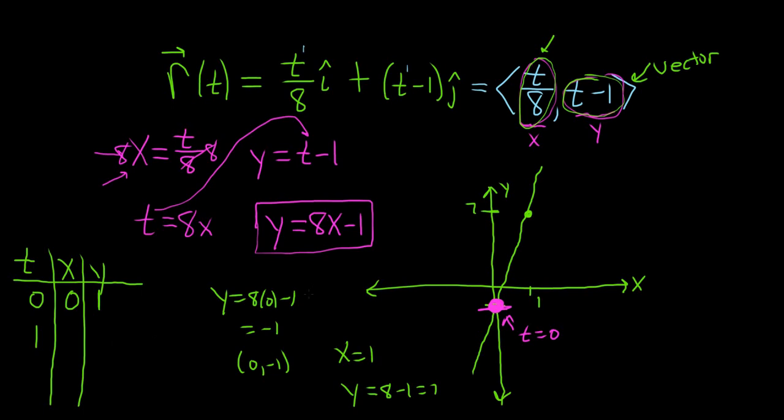When t is 1, we get x equals 1 eighth, right? Because t is 1, so it'll be 1 eighth. And y is equal to 0, right? Because you would get here, your y would be 0, right, when t is 1.